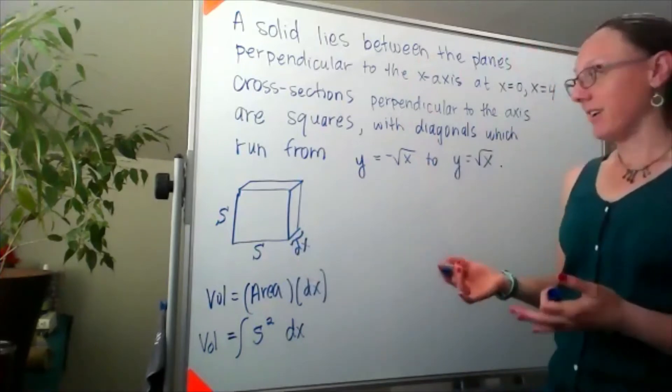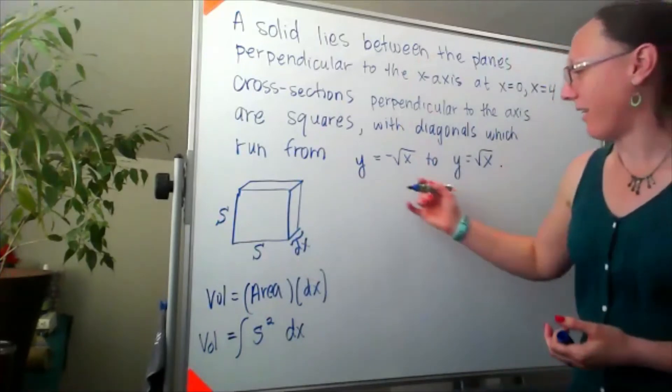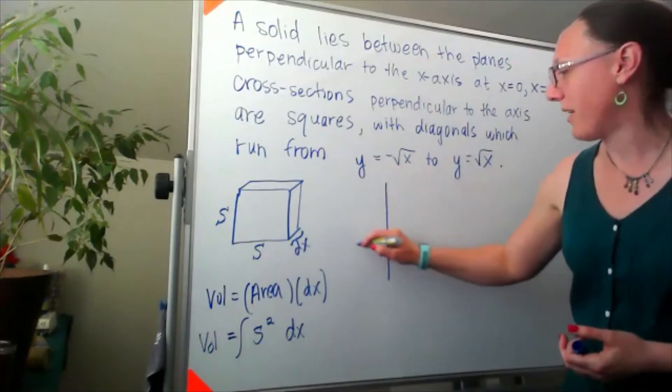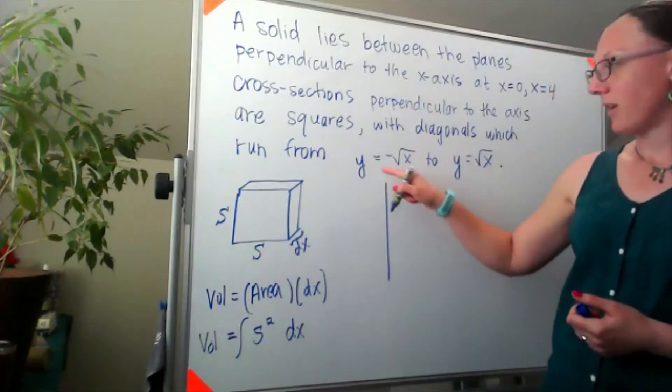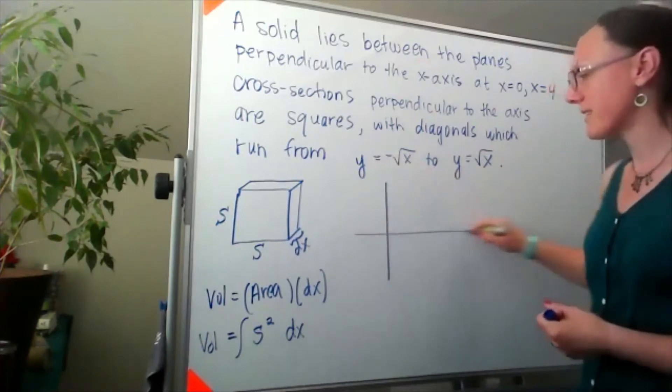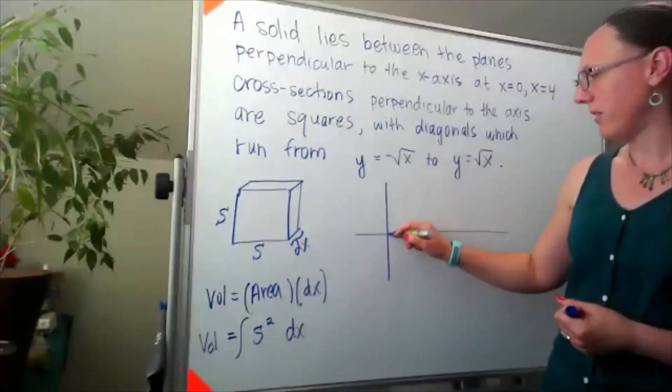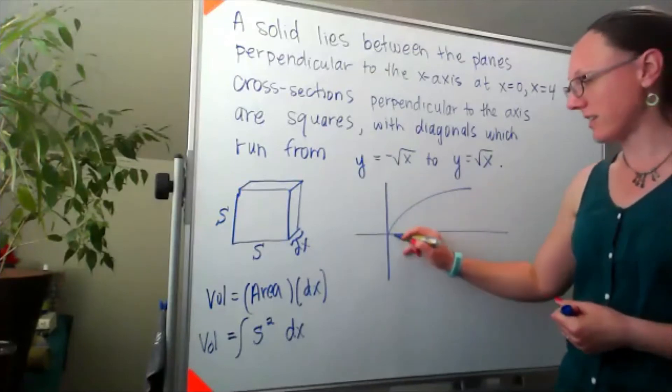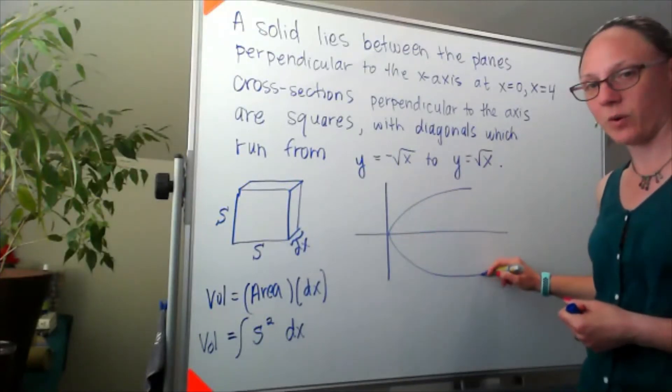I'm going to get a picture going here. We've got y equals negative square root of x to y equals positive square root of x. There's the positive square root of x and there's the negative square root of x.